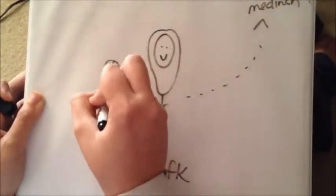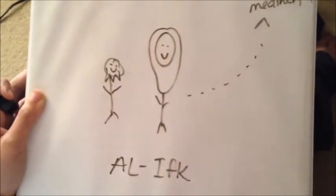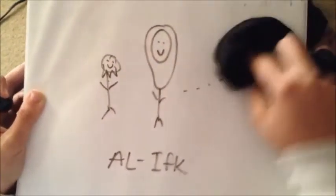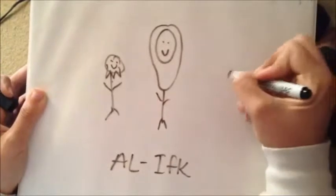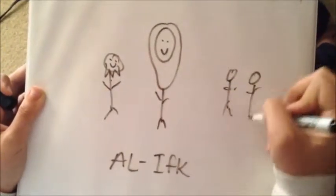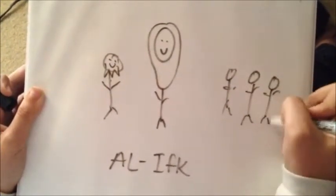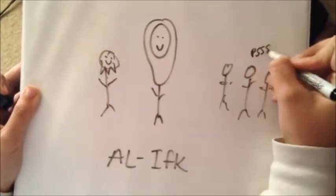Thankfully, another Muslim soldier had overslept and missed the caravan too. He found Aisha and helped take her back to Medina. Sadly, when they got to Medina, the Muslims saw them and thought that they were having an affair. Many rumors started spreading, and the people wouldn't believe the truth.